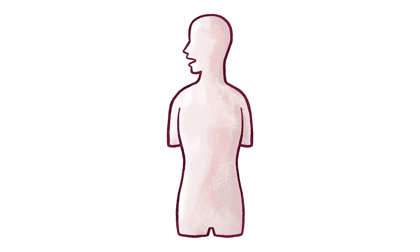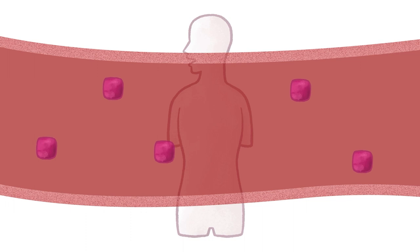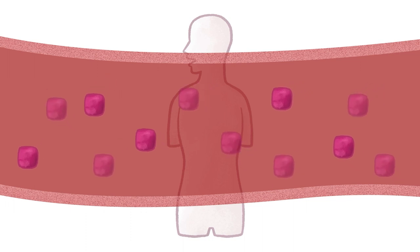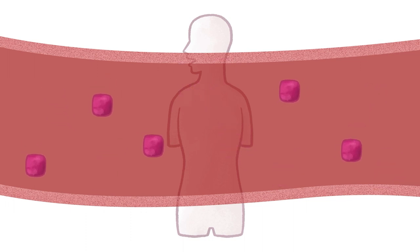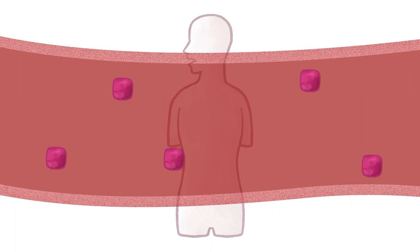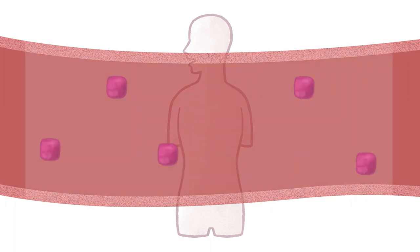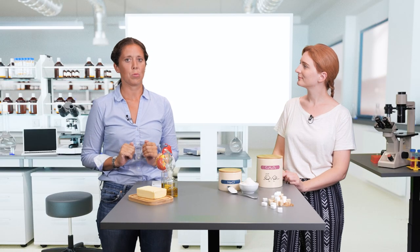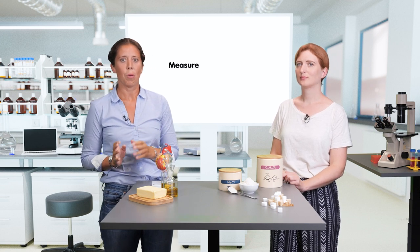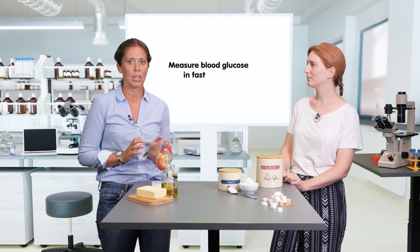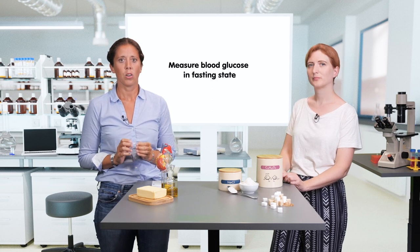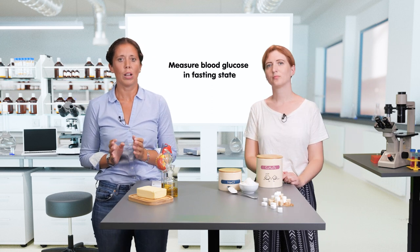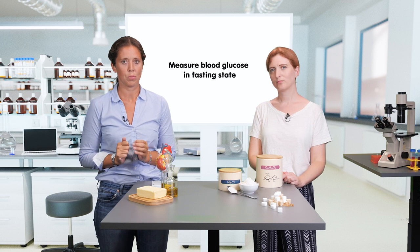After a meal, your blood sugar is generally high. But once glucose is taken up by the tissues, the level drops. To have reliable test results that can be compared between patients, blood sugar should therefore be measured before we eat something in the morning, which is also referred to as fasting glucose levels.